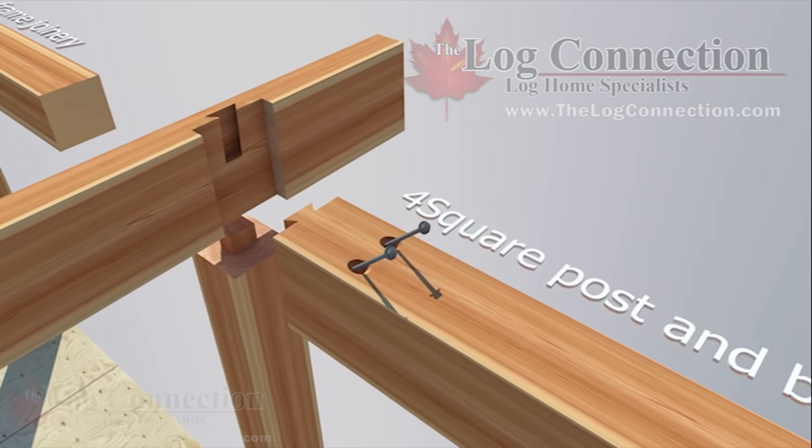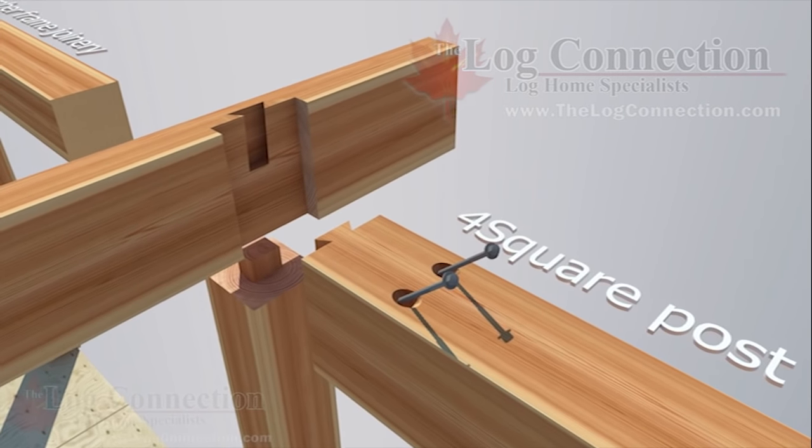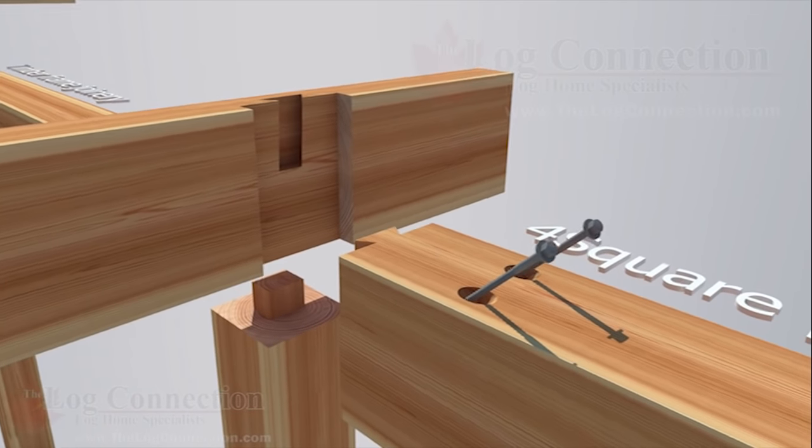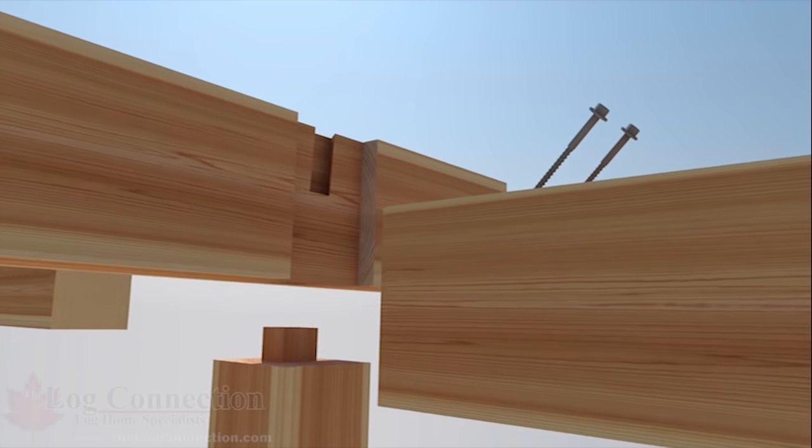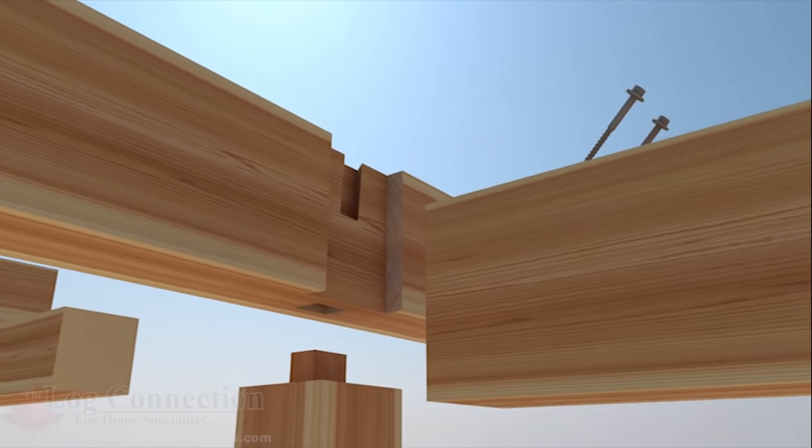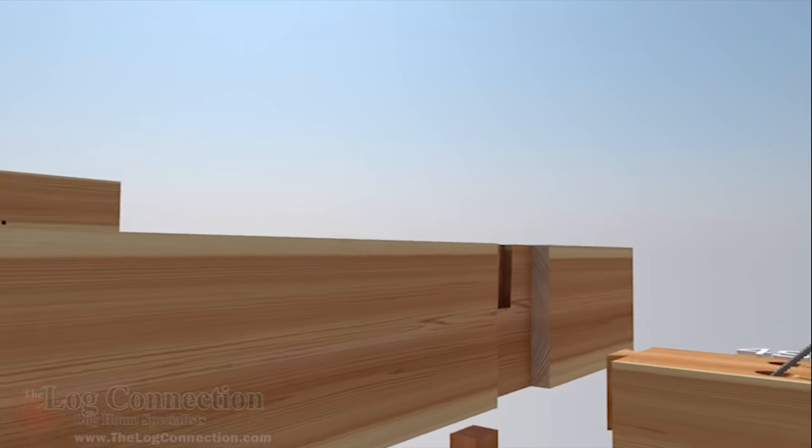As shown here, the patented interlocking dovetail system creates a positive hold that locks all horizontal beams together. Combine this with an integral mortise and tenon connection at each post and you have a modern self-locking system that often exceeds North American engineering requirements.